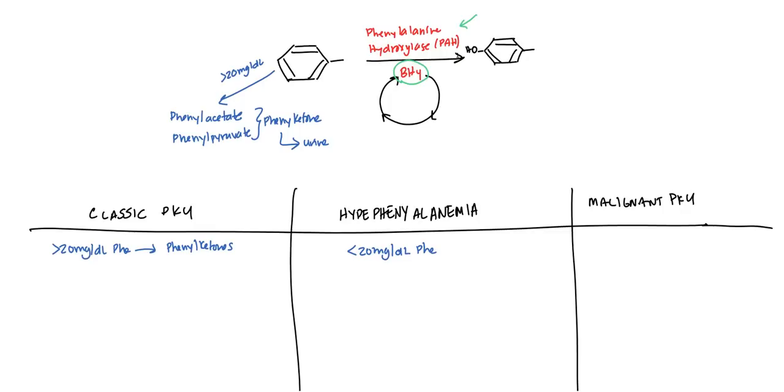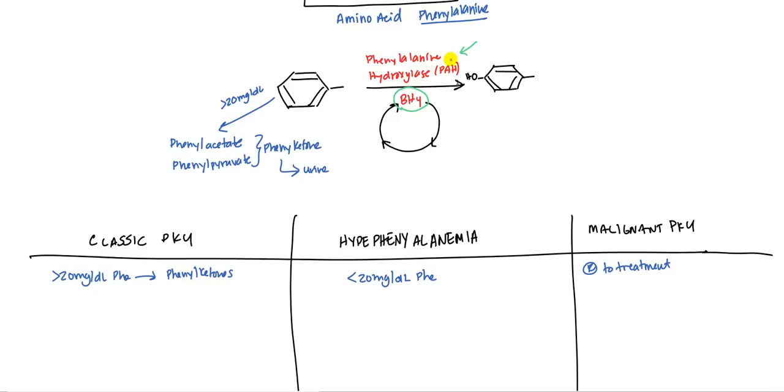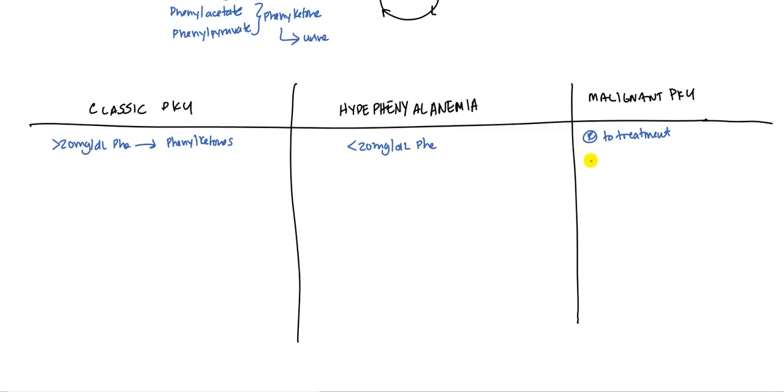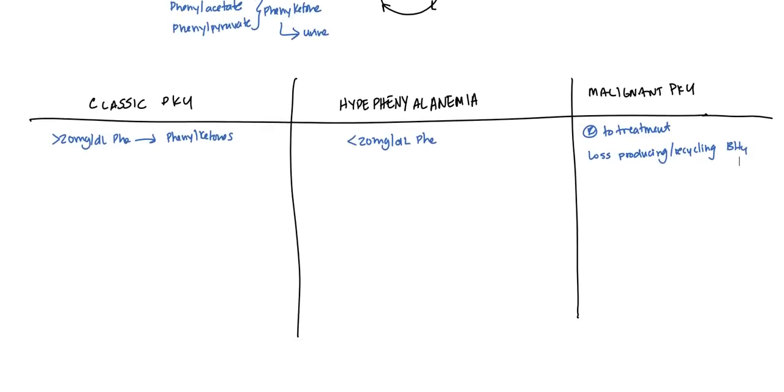Finally, with malignant phenylketonuria, this tends to be more resistant to treatment. And this is because the problem isn't necessarily with the enzyme. The problem is going to be with the tetrahydrobiopterin. So you're going to have a loss of either producing or the recycling of tetrahydrobiopterin, which is BH4. So either you're not making the BH4 or the recycling process, somewhere in that process you're not able to make it. And as we're going to get to, tetrahydrobiopterin is used for many other pathways as well, and so you're going to have symptoms that are much more varied.